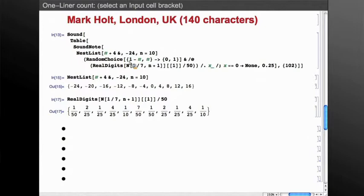So essentially, this is a number of tracks. Each track corresponds to one note. And that note is played randomly with a probability given by the digits of 1/7.